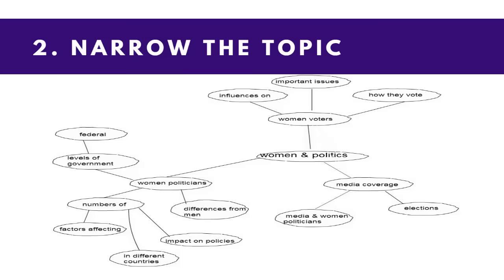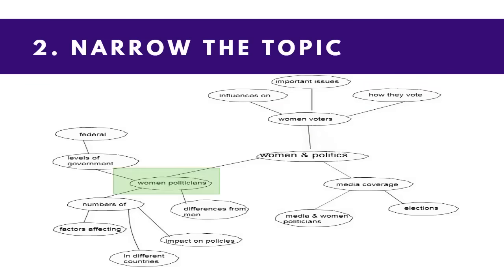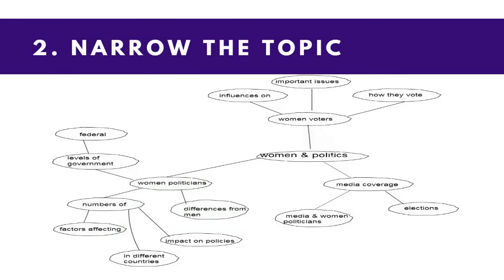Next, think of different aspects of the topic you could focus on. Here I've made a concept map of some of the different aspects of the topic women in politics. One might be women voters — how they vote, and whether they vote for women politicians. Another might be women politicians — differences from male politicians, how many there are, and what affects that. Once you've thought about what aspects of the topic there are, pick one of them to focus on. Let's pick numbers of women politicians and what affects that.